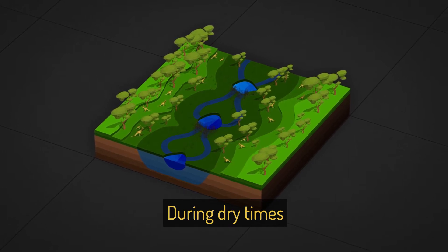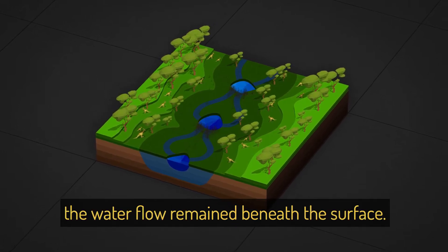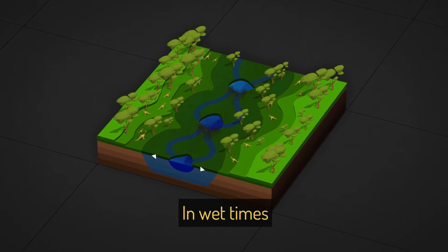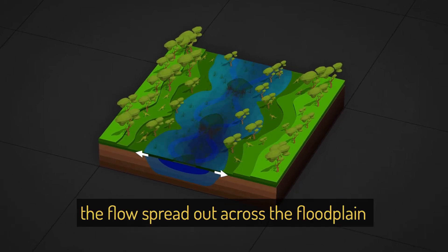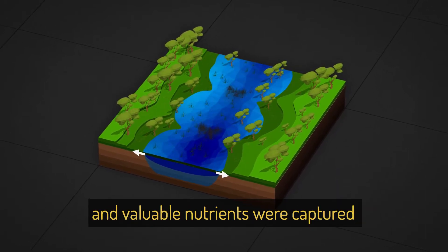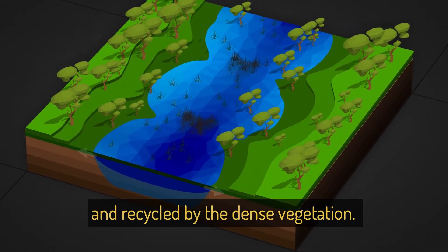During dry times, the water flow remained beneath the surface. In wet times, the flow spread out across the floodplain and valuable nutrients were captured and recycled by the dense vegetation.